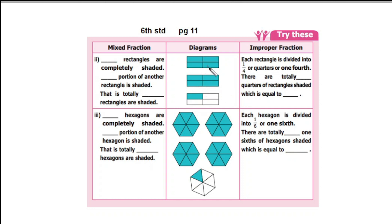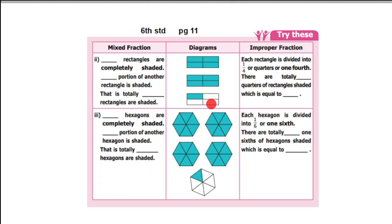First, let's look at the picture. There are three rectangles. Two rectangles are all the way colored. The third rectangle has some color. We will see how the next fraction is. Now, how many rectangles are completely shaded? Two rectangles are all the way colored. Each rectangle is divided into four portions. In this rectangle, how many portions are shaded? One portion is shaded out of four portions.